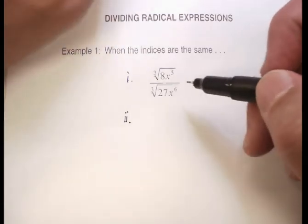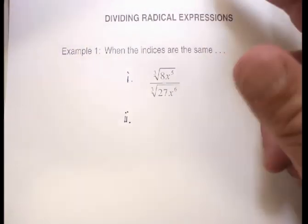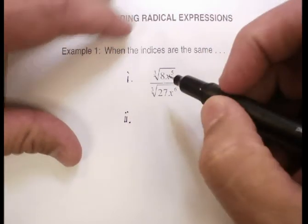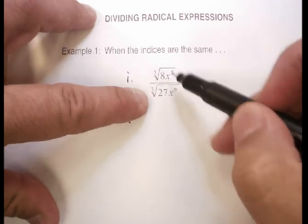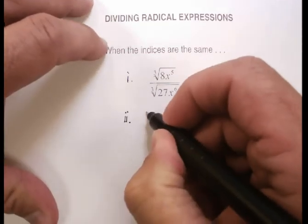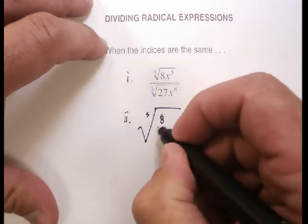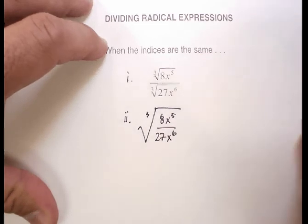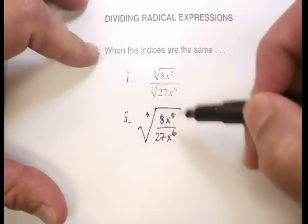I could do those separately. There are actually more than a couple of different ways to approach this, which is why these can be a bit tricky — there are many options. Don't take what I'm doing as the only way. The technique I'm going to use: since the indices are the same, I'm going to rewrite this all under one big cube root — the cube root of 8x to the fifth over 27x to the sixth.